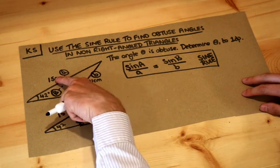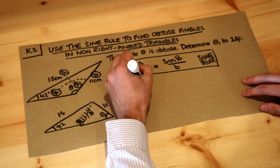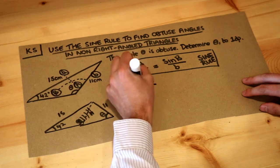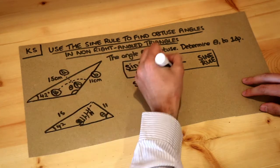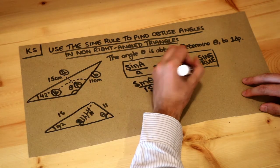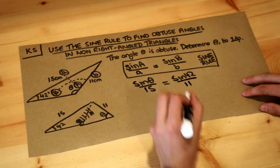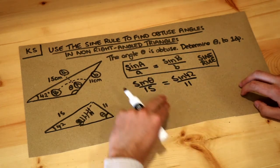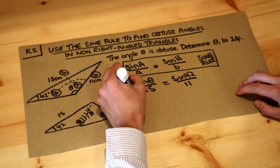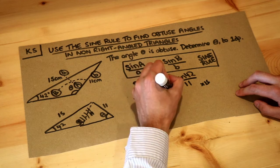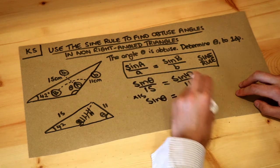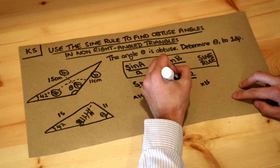So then just substitute this formula: sine of capital A, so sine of theta—this is the Greek letter theta—over little a, which was 15, is equal to sine of 42 over 11. And then we want to get theta on its own, so we need to multiply both sides by 15 to get rid of that over 15. And that gives you sine of theta is—and then remember when we times a fraction by 15, we can put the 15 at the top—so it's 15 sine 42 over 11.